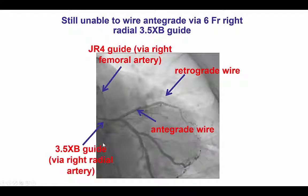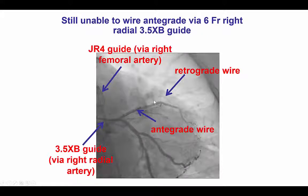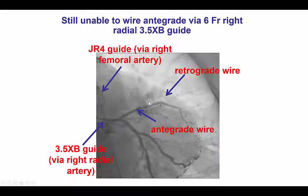We then obtained right radial access and used a 3.5 XP guide to engage the left main. We then tried to do what today we know is called the just-marker technique — using the retrograde wire, which had actually crossed into the distal true lumen into the left main, as a marker to advance an antegrade wire, or try a true-to-true crossing.